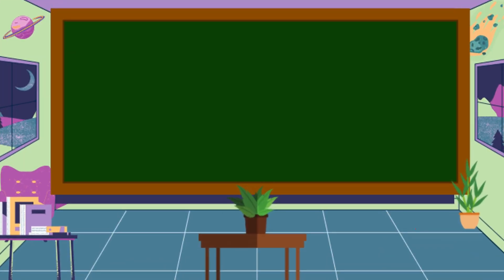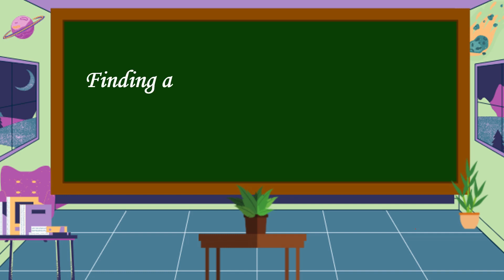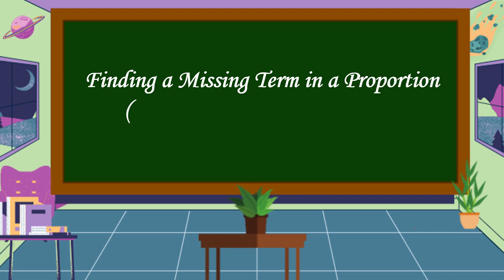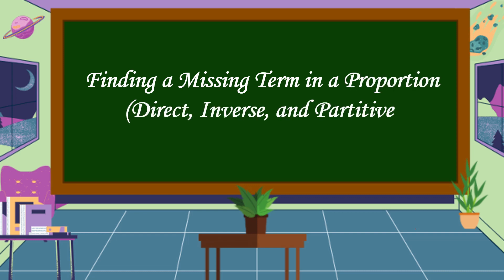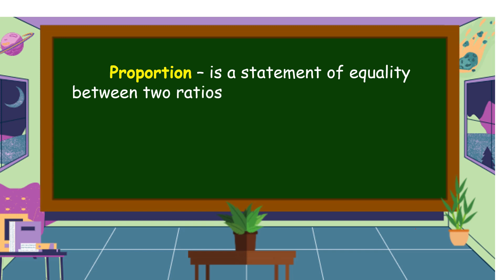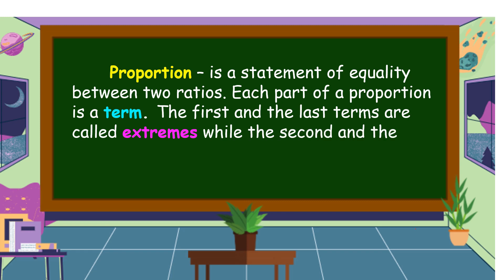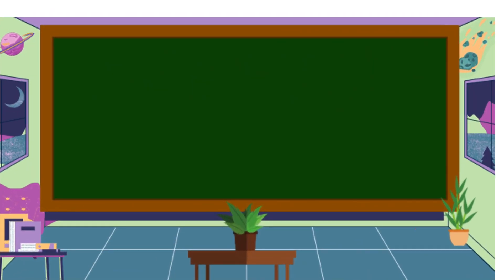Hello everyone, welcome to Math is Fun. Our lesson for today is all about finding a missing term in a proportion — direct, inverse, and partitive. A proportion is a statement of equality between two ratios. Each part of a proportion is a term. The first and last terms are called extremes, while the second and third terms are called means.